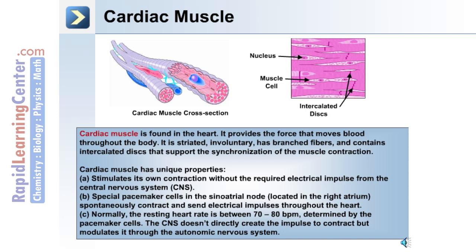Cardiac muscle has unique properties. First, it can stimulate its own contraction without the required electrical impulse from the central nervous system. Second, it has special pacemaker cells in the sinoatrial node of the heart, which spontaneously contract and send electrical impulses throughout the heart muscle.